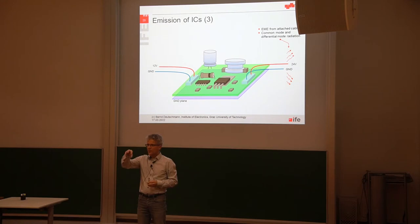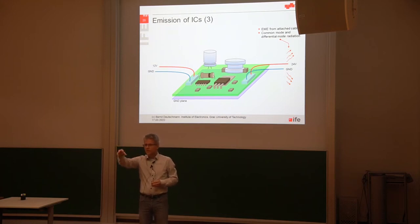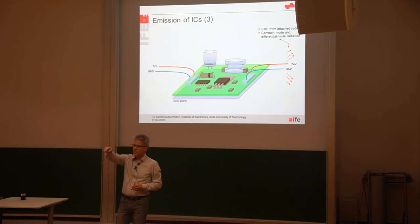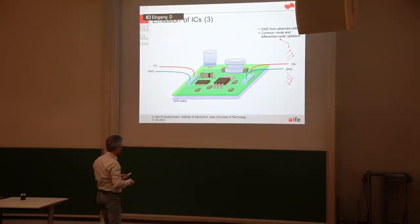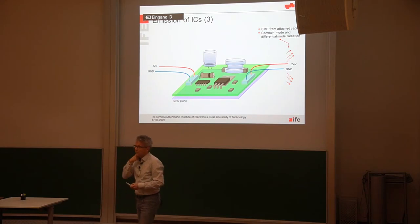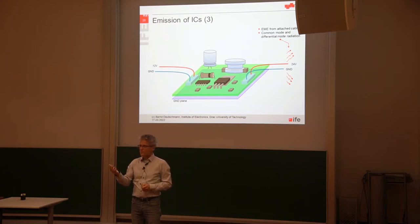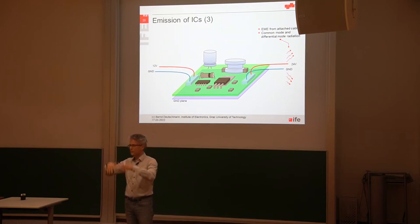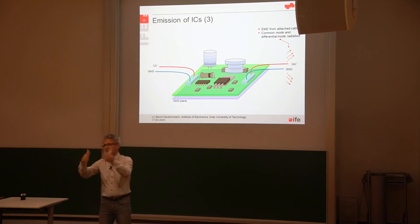The current mainly flows out of an IC at the top layer on a printed circuit board trace, then into another IC, and then flows back via the ground plane — so it is a signal return plane. This is how we generate differential mode and common mode currents. For differential mode emission it is pretty simple: the current flows in a loop, and out of that loop we generate electromagnetic energy — magnetic fields coming out. That is the reason for differential mode emission.